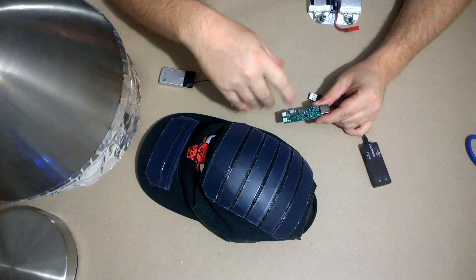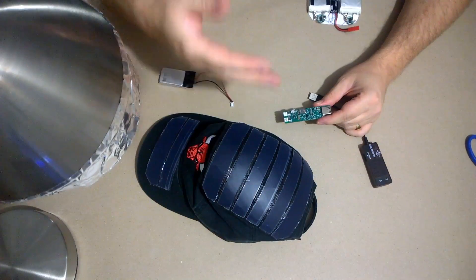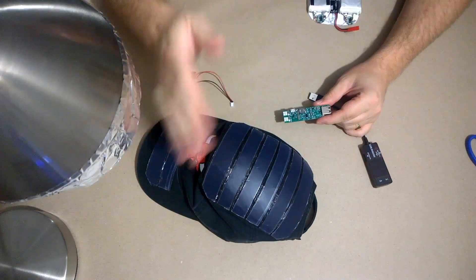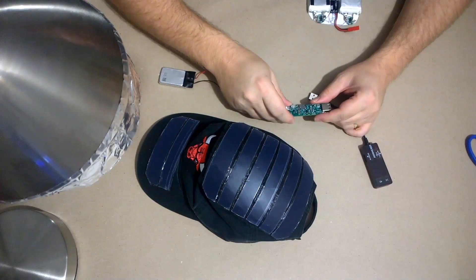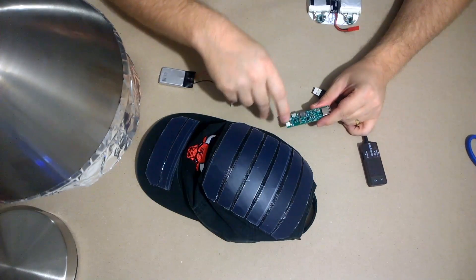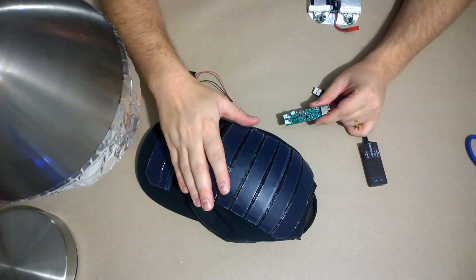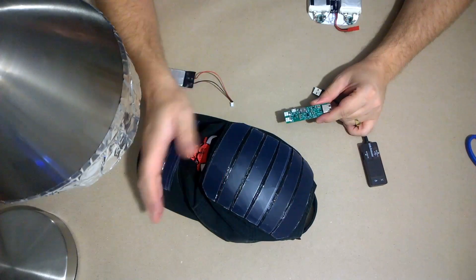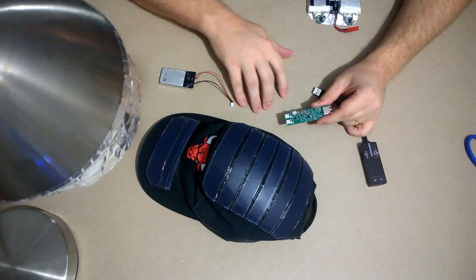What that's going to do for us is it's going to allow us to make use of light that's significantly less powerful than was previously required. So either heavily obscured outdoor light or even indoor light, if it's strong enough, you can now charge the battery.